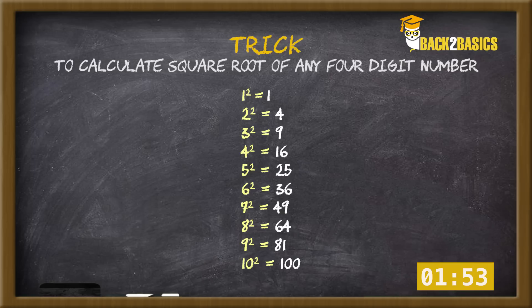Now we are ready to calculate square root of any 4-digit number. Let's start with an example. Say, square root of 7921.